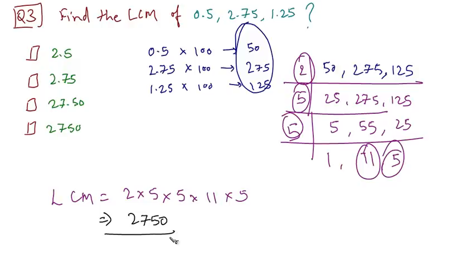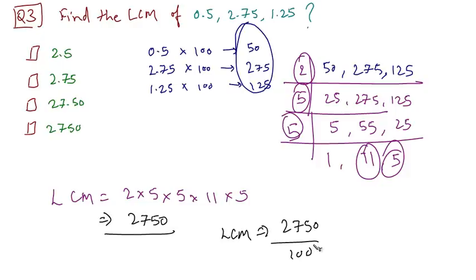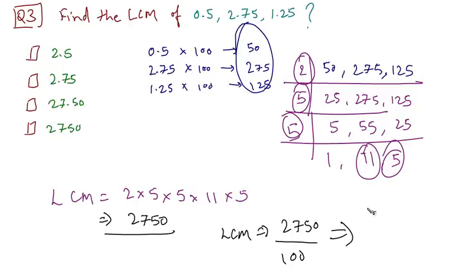This is not the final answer because we are yet to recover the decimal point. The final LCM is equal to 2750 divided by 100, which gives us the answer as 27.5. So the correct option is option 3.